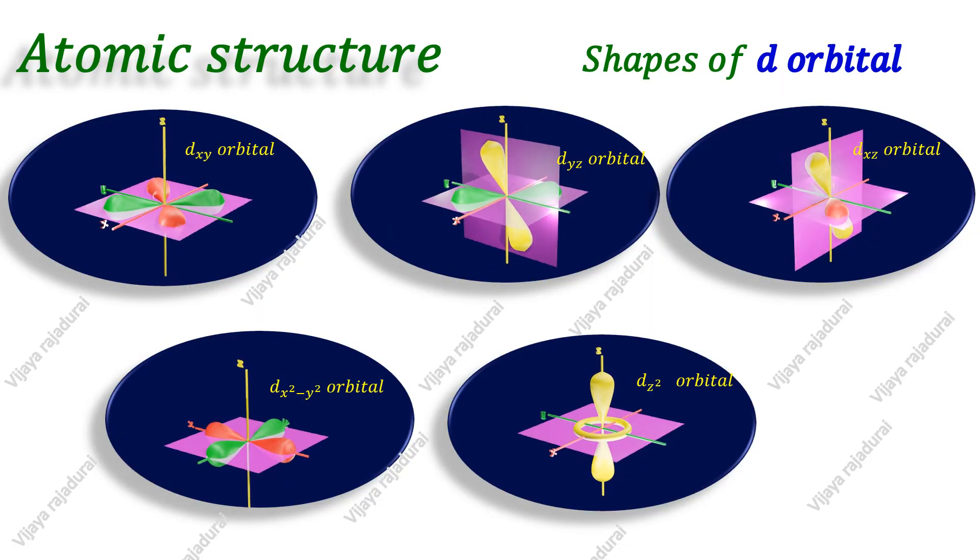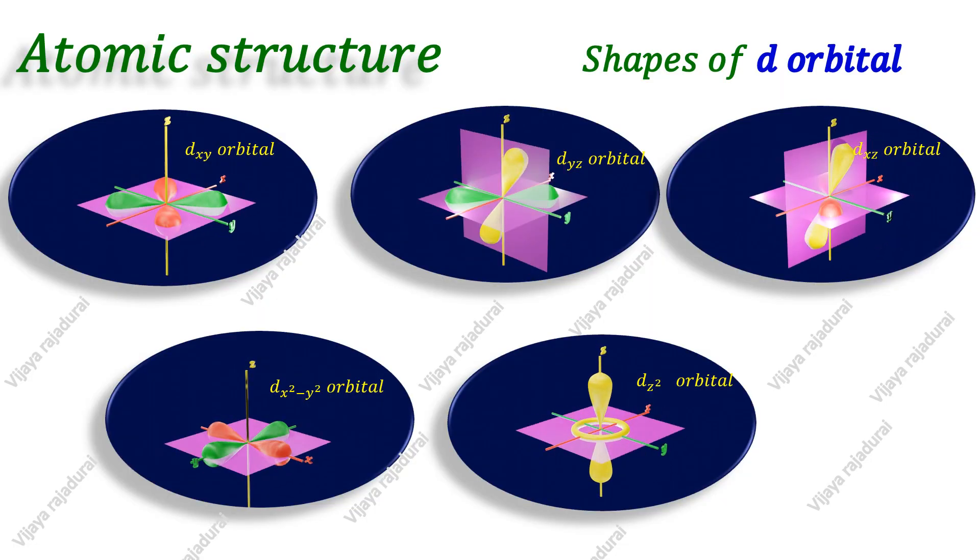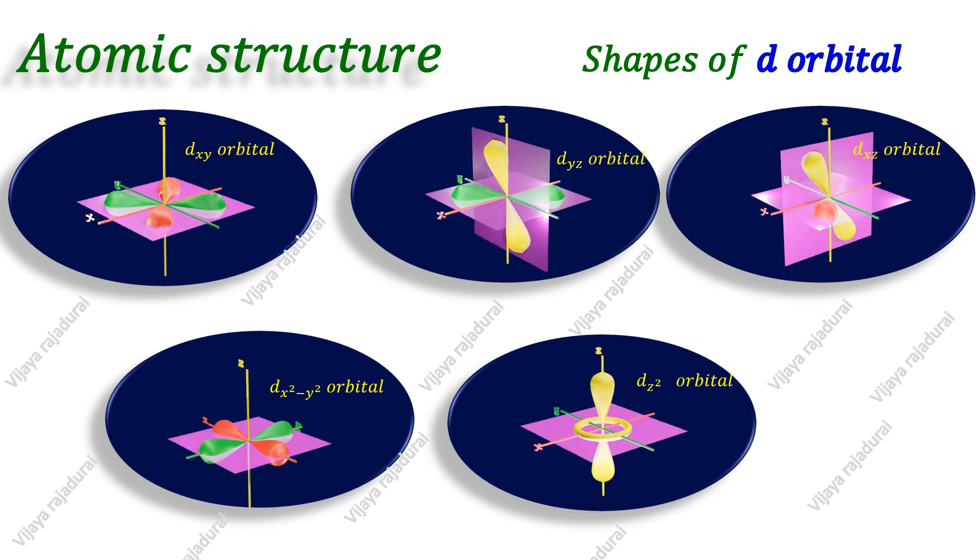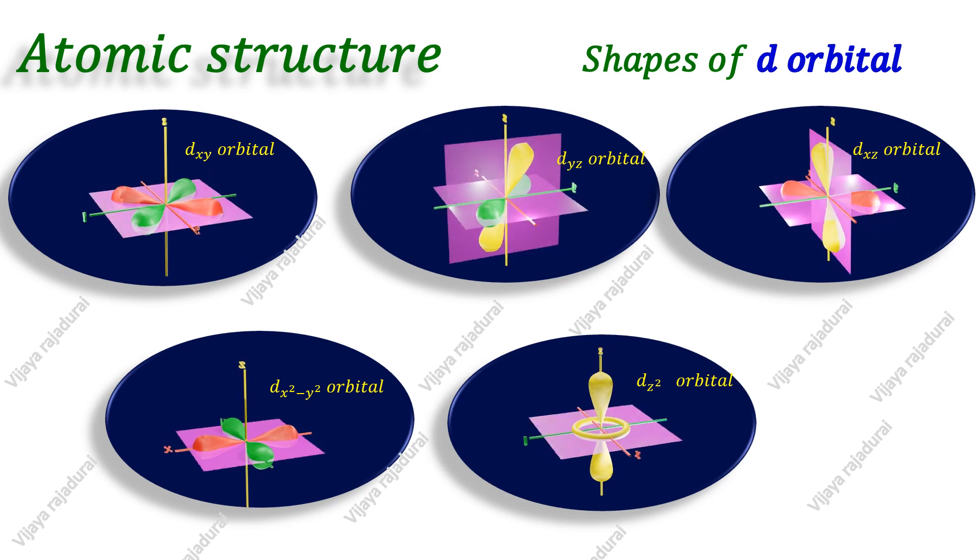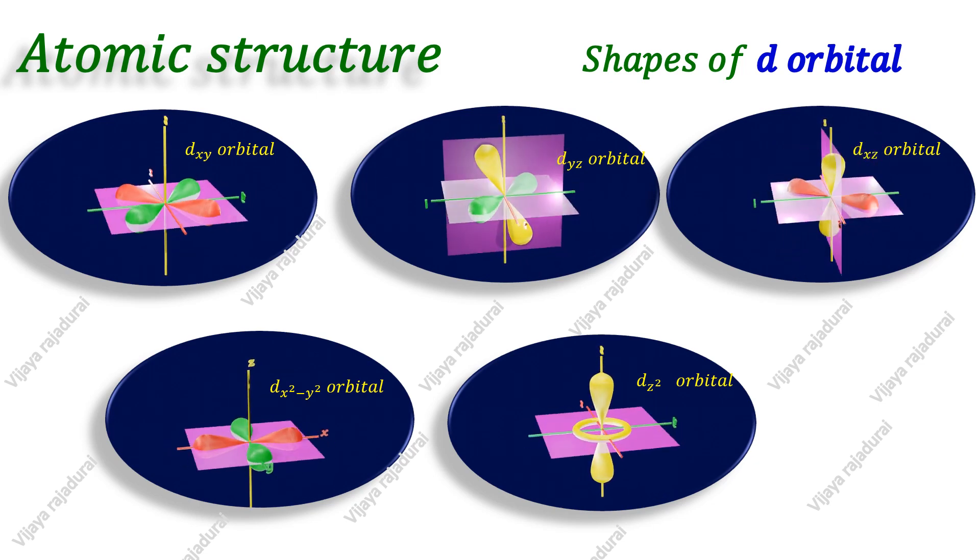So, totally five d orbitals are present. The d orbitals are dxy orbital, dyz orbital, dxz orbital, dx² - y² orbital, and dz² orbital.